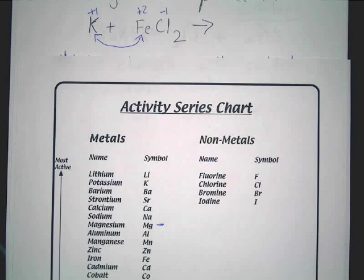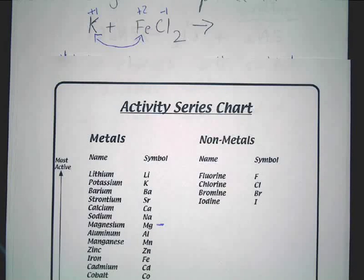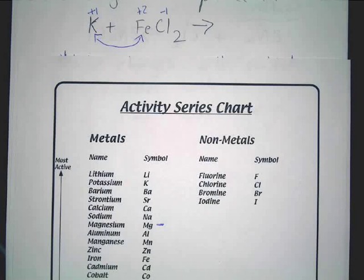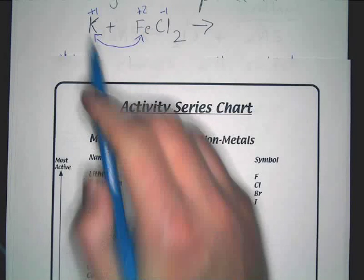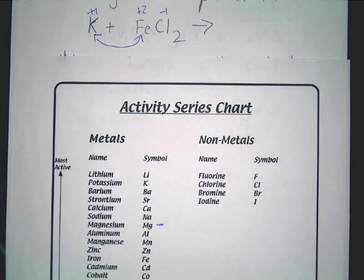The chart tells you whether the reaction takes place. If no reaction takes place, you can just write NR — no reaction — and you're done with the problem. Even if they're both positive, if the element by itself is lower on the chart, nothing will switch. I'm going to do an example of that too.